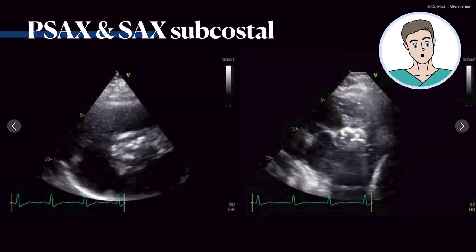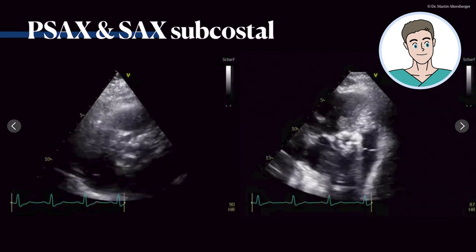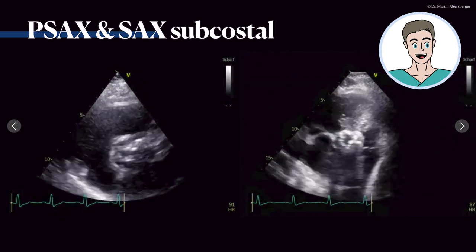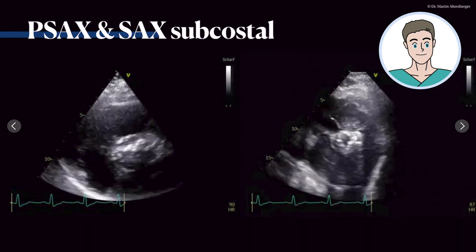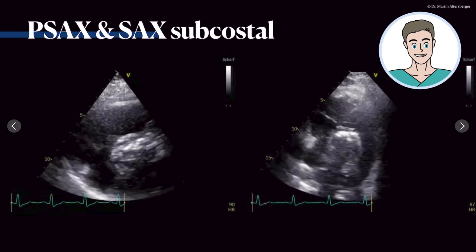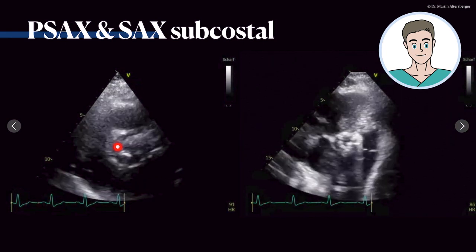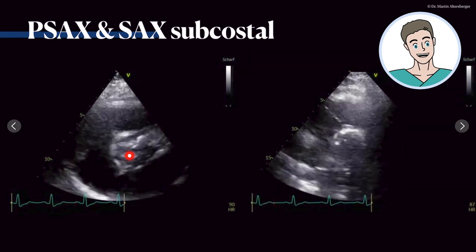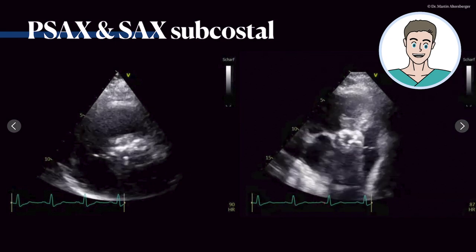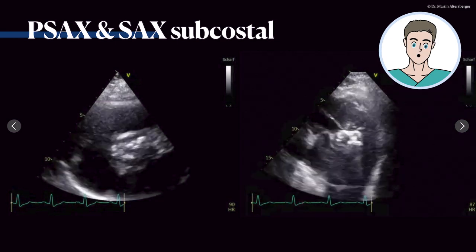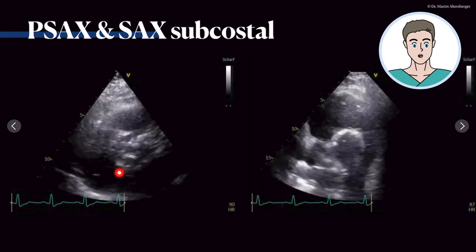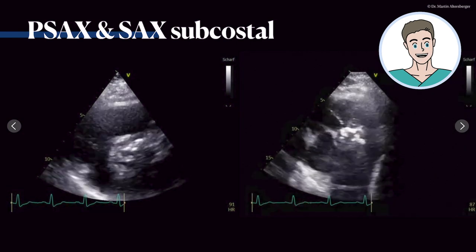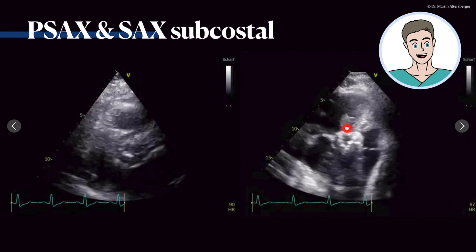Let me take a look now at Ernest's case. Here in the short axis view it's very hard to differentiate individual cusps because it's simply just severely calcified. There is probably a little bit of opening left, and if you do not have an optimal view from the parasternal short axis, you can also choose a view from a subcostal approach.